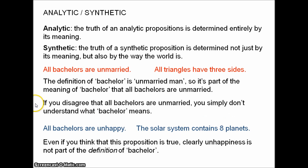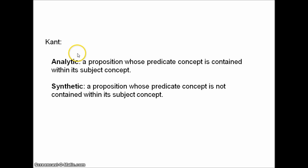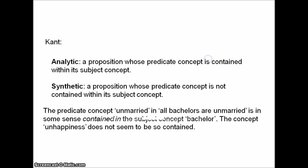An important way of phrasing the analytic-synthetic distinction was provided by Kant. He defined it this way: an analytic proposition is one whose predicate concept is contained within its subject concept, and a synthetic proposition is one whose predicate concept is not contained within its subject concept. So the predicate concept 'unmarried,' in 'all bachelors are unmarried,' is in some sense contained in the subject concept 'bachelor,' while the concept of unhappiness does not seem to be so contained.